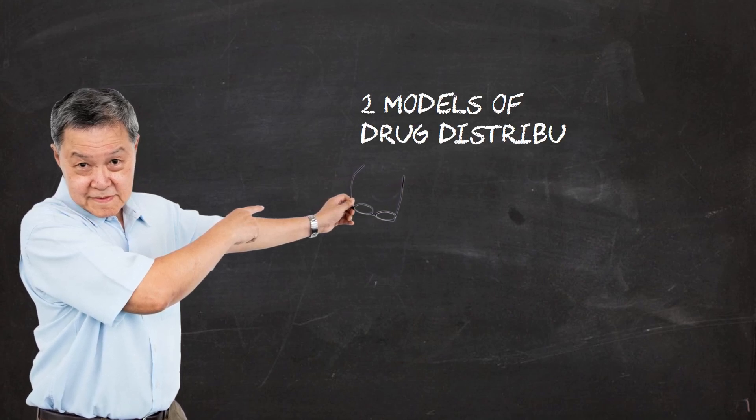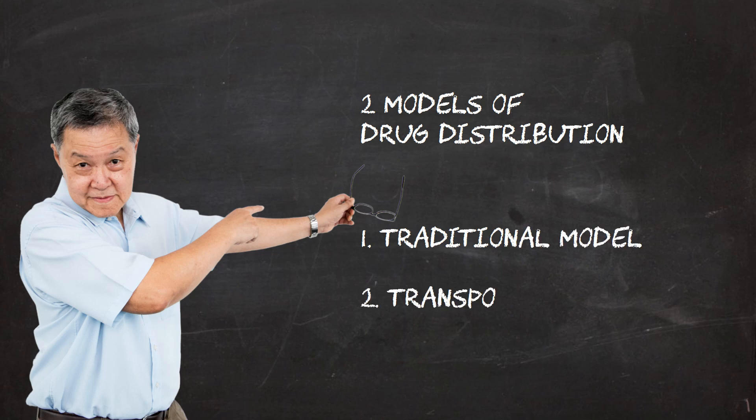There are really two distinct theoretical models to account for drug distribution. The first is a traditional model. The second model takes into consideration the action of drug transporters which are expressed on the membranes of various cells and tissue compartments. It is important to understand these two models because they help us understand at least part of the reason why individuals may differ in terms of their drug responses.